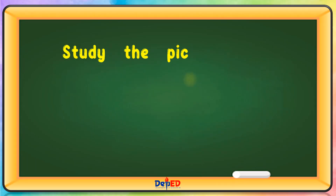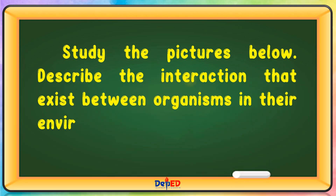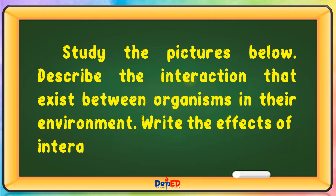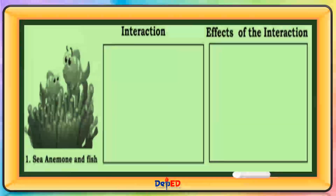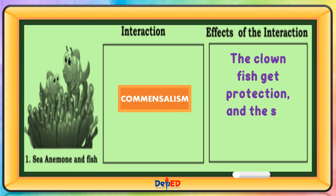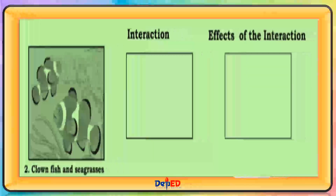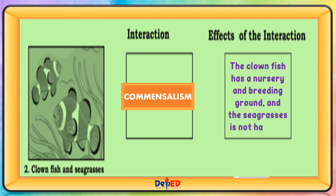Study the pictures below. Describe the interaction that exists between organisms in their environment. Write the effects of interaction on these organisms. Sea anemone and clownfish — this is commensalism. The clownfish gets protection and the sea anemone is not harmed. Clownfish and sea grasses — this is also commensalism. The clownfish has a nursery and breeding ground and the sea grasses are not harmed.